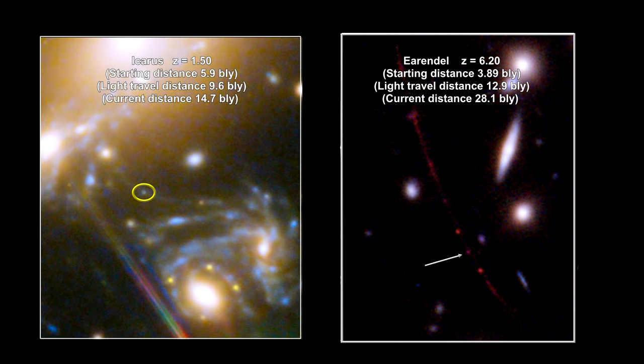This find represents a significant jump back in time compared to the previous single star record holder, Icarus, covered in our 2018 review. Its redshift is 1.5. Arendelle is almost twice as far away from us now as Icarus.